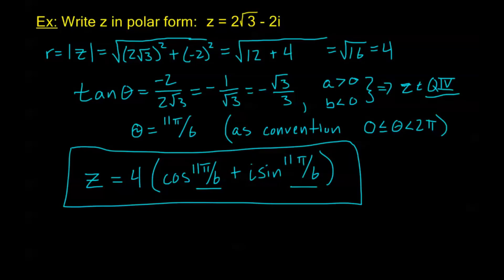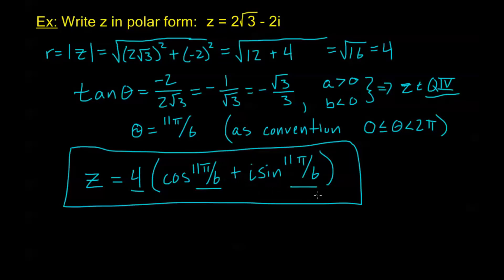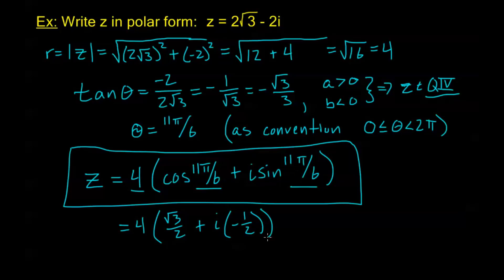So in polar form, z equals 4 times (cosine(11π/6) plus i·sine(11π/6)). To verify this matches our original form: cosine of 11π/6 is √3 over 2 and sine of 11π/6 is negative 1/2. Multiplying through by 4 gives 2√3 minus 2i, which is exactly what we started with. So to convert from polar back to rectangular, just evaluate the trig values and simplify.